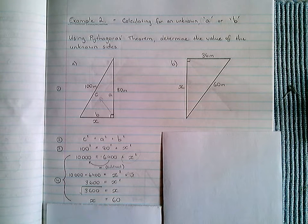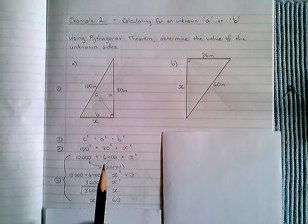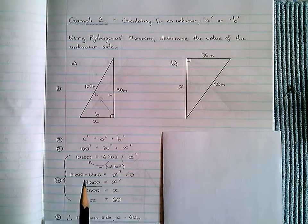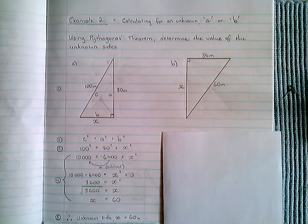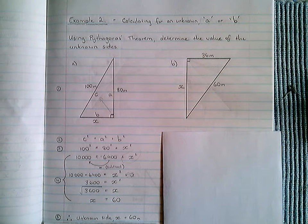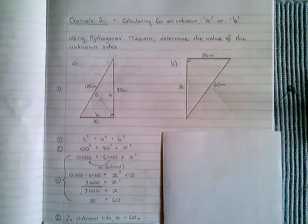This is the value for the unknown side, but as a final fifth step, just like with example one, I've gone ahead and explicitly written the value for that unknown side, X equal to 60, and note, I've included the units, metres, which I can get from the question. That question is therefore solved and completed.